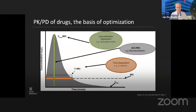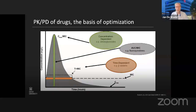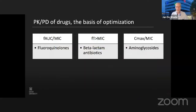This is a figure you've probably seen before, distinguishing between drugs that are concentration dependent, where you want a high concentration for the effect, and others like the beta-lactams that are time dependent, where you need a prolonged exposure. We have identified different PKPD indices: the AUC over the MIC, the time above the MIC, and the maximal concentration over the MIC, depending on the drug you are using.